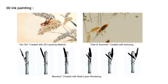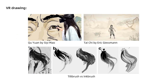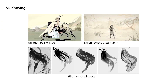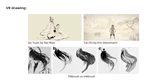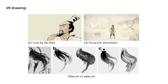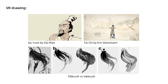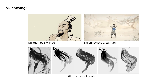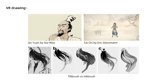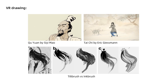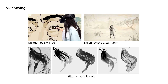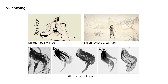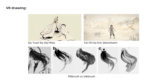While VR painting has become relatively mature, with artists creating many beautiful works, there's still no easy way to produce authentic ink strokes digitally. Artists often have to manually combine hundreds of pen strokes to mimic ink textures. This tedious process can distract them from creativity, turning the act of creation into a repetitive task rather than an artistic expression.